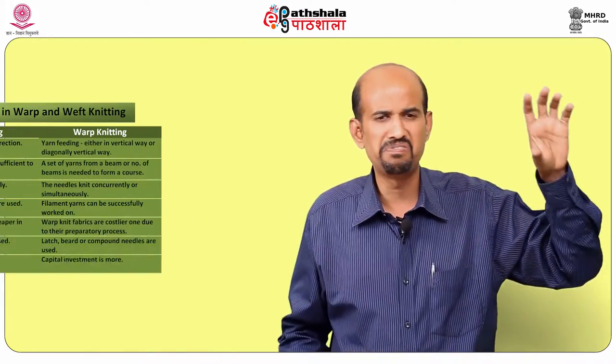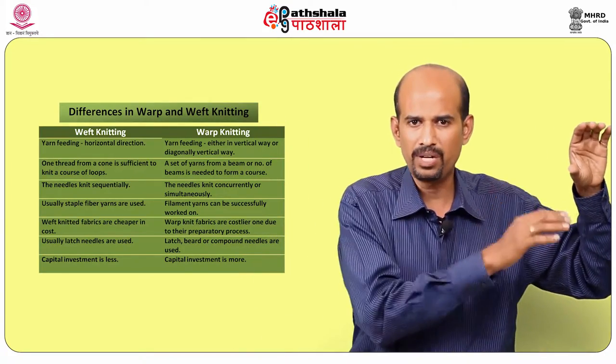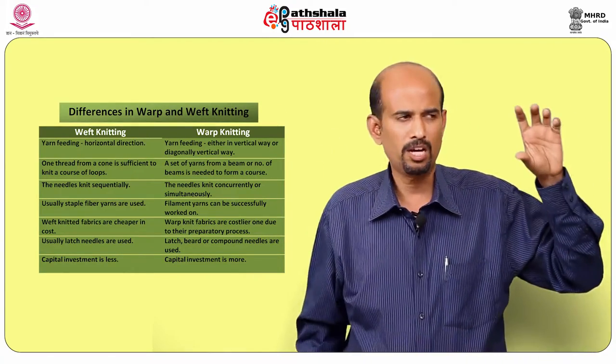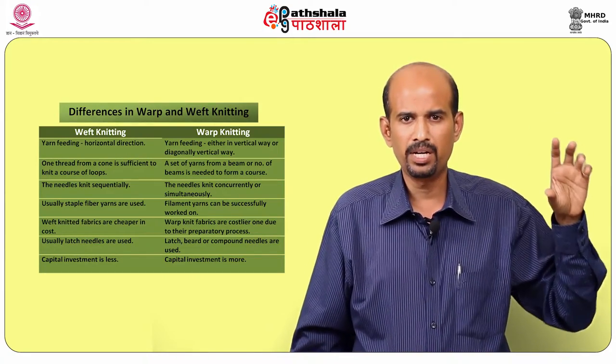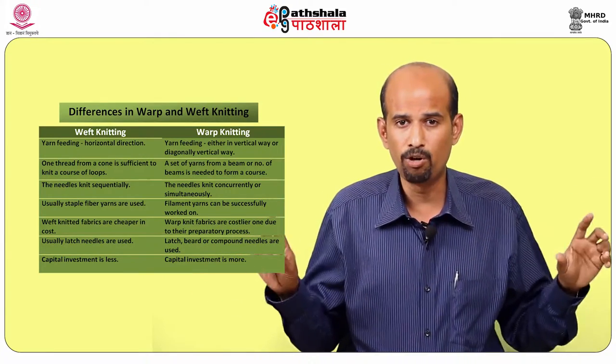Next we will see the classification of knitting machines. There are two main classifications: weft knitting and warp knitting. There are also sub-classifications like circular knitting machine and flat knitting machine. Weft knitting is inter-looping of yarn, and warp knitting is also inter-looping of yarn, but the direction differs. Weft knitting is inter-looping in the course-wise direction — that is, the series of loops formed in a course-wise direction. This is called weft knitting.